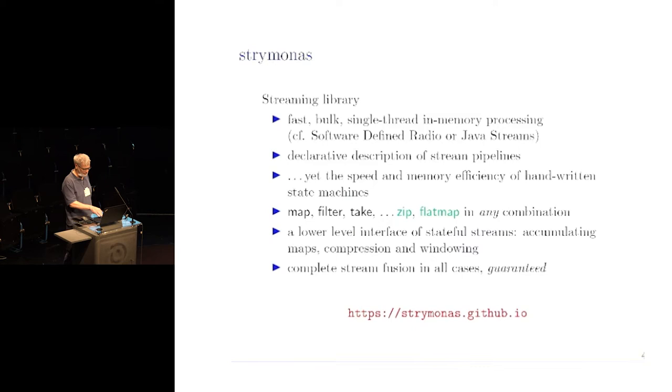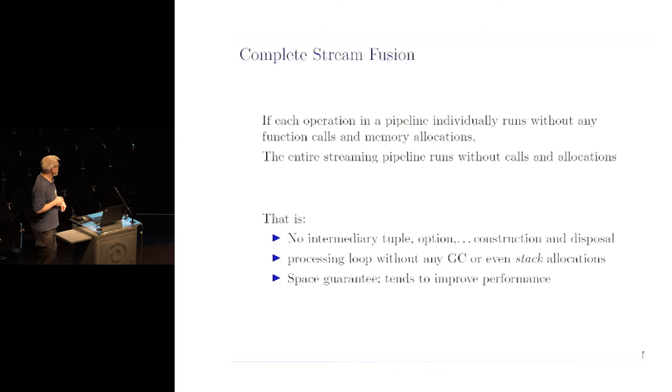What is complete stream fusion? If each individual operation in a pipeline, like mapping function, et cetera, runs without any function calls and allocations, then the entire pipeline runs without any function calls and allocations. It means there are no intermediary tuples, options, et cetera, construction and deconstruction. The entire processing loop can run in constant, real constant memory space and even stack space, without adjusting stack. Complete stream fusion is mainly a space guarantee, but in our experience it also tends to improve performance because you don't have to construct or deconstruct tuples.